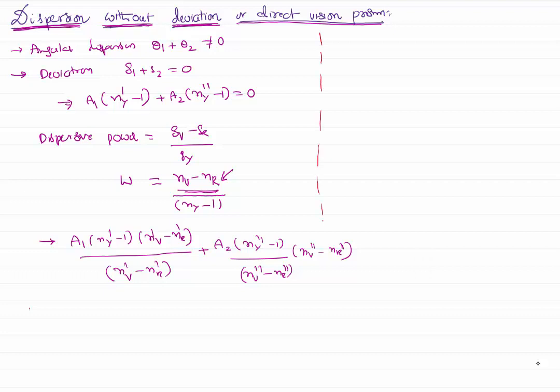That implies theta 1 by omega 1 equal to minus theta 2 by omega 2.